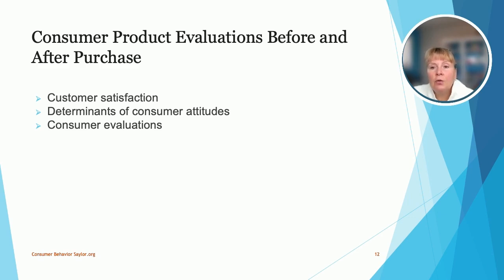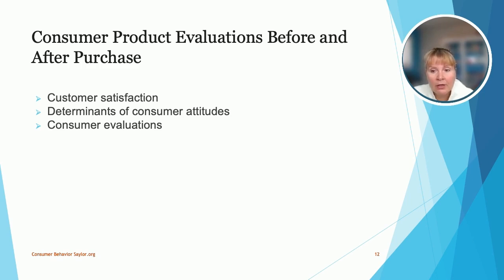When a consumer hears about a new, exciting product, they may speak to friends, research the product, and order it. When the product arrives and they begin to use it, if they're still excited, they may start to feel consumer satisfaction. When a consumer has a good or bad purchasing process, they may develop determinants or customer attitudes. If they become more excited than when they first heard about the product, they may tell others about their experience or write a review, which potential customers may read — helping to perpetuate a continuous buying cycle. It's important that marketing be as specific and honest as possible so that customers are not disappointed when the product arrives.